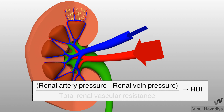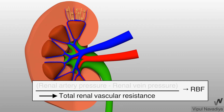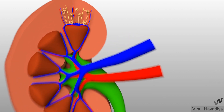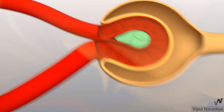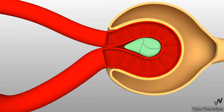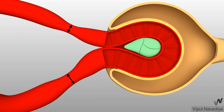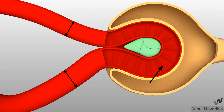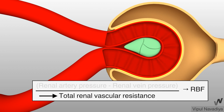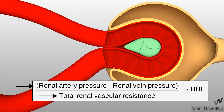That is why this parameter is taken as the numerator in this equation. The denominator is total renal vascular resistance. Vessels with smaller diameter, including afferent and efferent arterioles, provide resistance to blood flow. The more the resistance, the less the blood flow, and the less the resistance, the more the blood flow. So resistance is taken as the denominator in this equation, and renal blood flow is determined by these two factors.